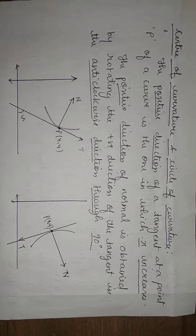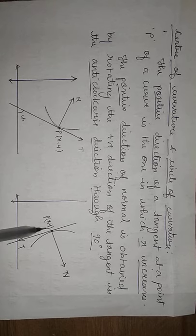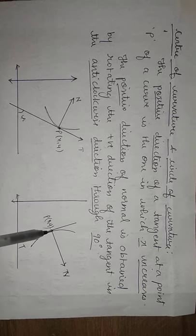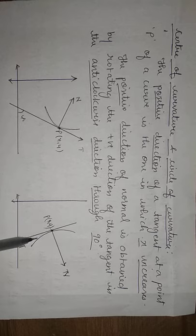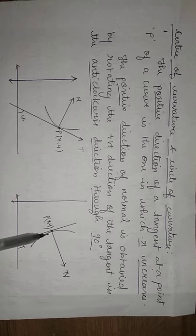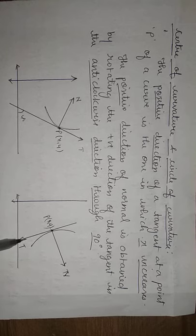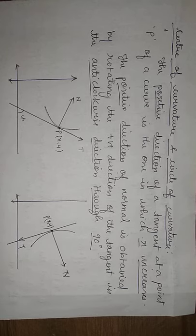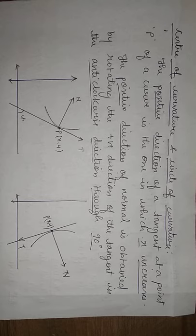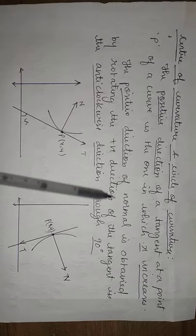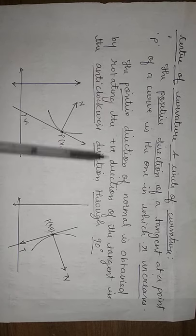Here, the x values are increasing but the y values are decreasing. Since it is decreasing, we are going to take it as negative — that is, the negative direction of the tangent. Next, the positive direction of the normal is obtained by rotating the positive direction of the tangent in the anti-clockwise direction.